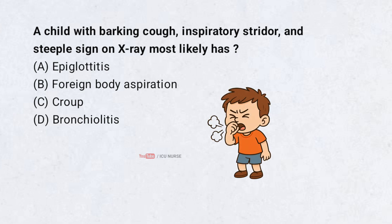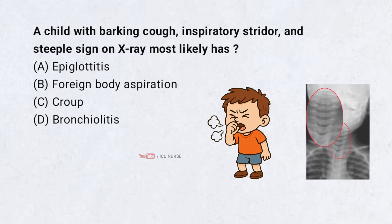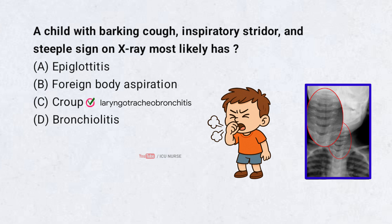A child with barking cough, inspiratory stridor, and a steeple sign on X-ray most likely has: A. Epiglottitis. B. Foreign body aspiration. C. Croup. D. Bronchiolitis. Correct answer: C. Croup. Croup, or laryngotracheobronchitis, is viral in origin and causes a characteristic barking cough and stridor. The steeple sign is seen due to subglottic narrowing.